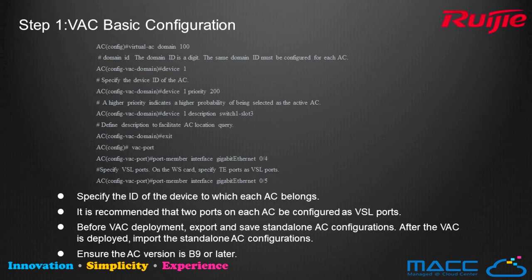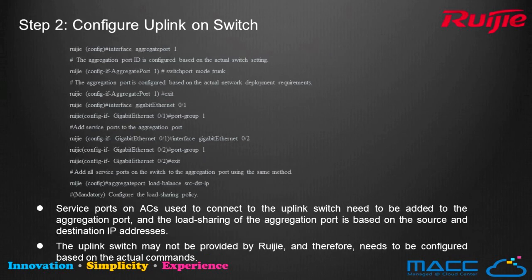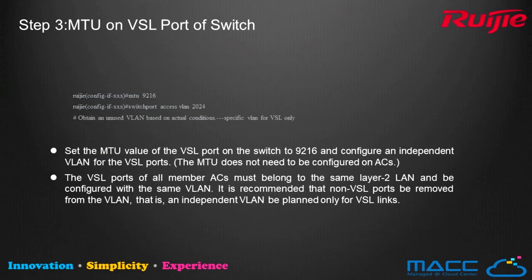Step 1: VAC basic configuration. Select a Domain ID and configure the priority for each VAC member. It is recommended to use two ports on each AC configured as VSL ports. Step 2: Configure uplink on the switch. Service ports on ACs used to connect to the uplink switch need to be added to the aggregation port, with load sharing based on source-destination IP addresses. The uplink switch may not be a Yuejie product, so configure it based on actual commands. Step 3: Configure MTU on the VSL port. The MTU of the VSL port needs to be set to 9216, and it is recommended to use a specific VLAN for Layer 2 switching for VSL.